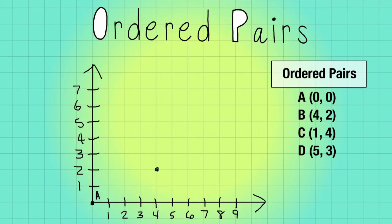Okay, C is over one, up four, so I'm going to go over one, up four, C. And D is over five, up three, over five, up three, and D.